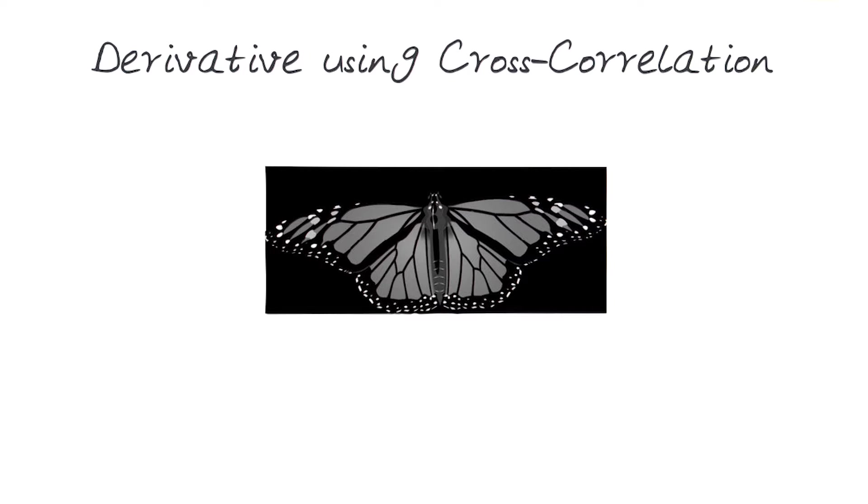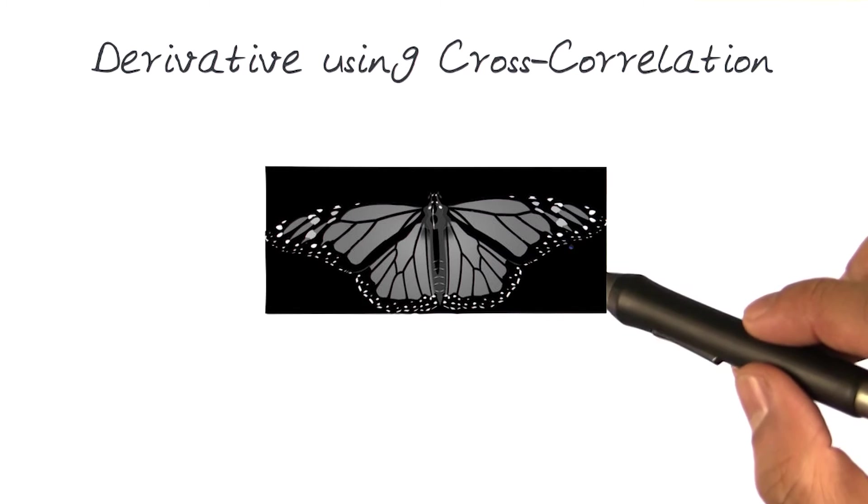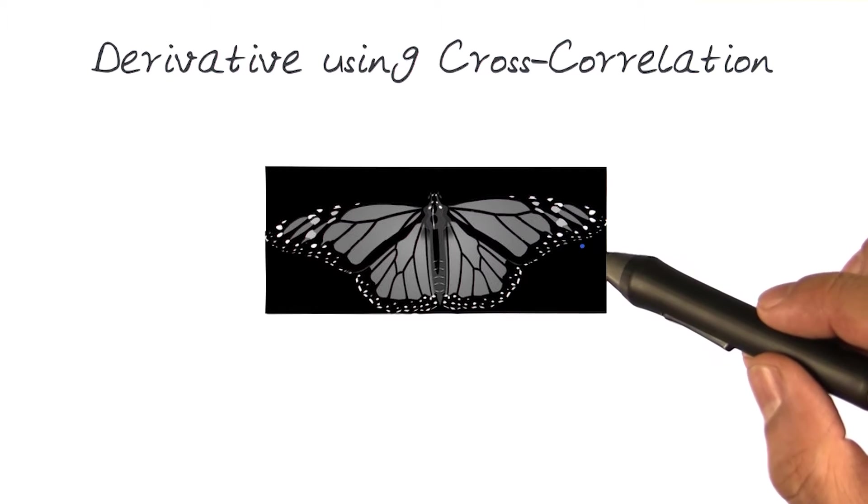So let's look at the whole concept of using, again, computing derivatives using cross-correlation. Let's take a simple example here of an image of a monarch butterfly.